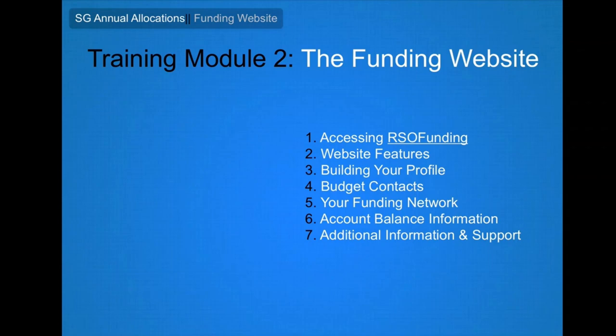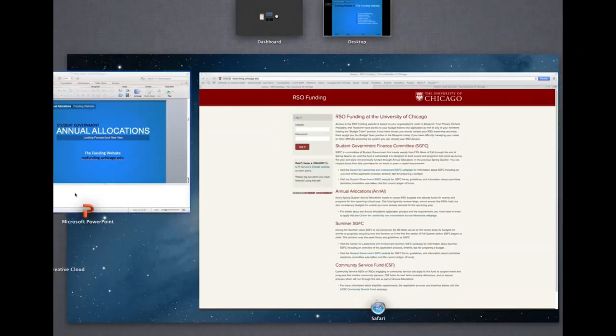Annual allocations applications are all made online via the RSO funding website, which you can access at rsofunding.uchicago.edu.